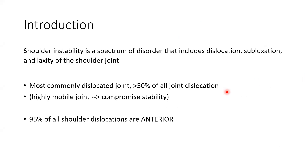Shoulder instability is a spectrum of disorder that includes dislocation, subluxation, and laxity of the shoulder joint. It is the most commonly dislocated joint, accounting for more than 50% of all joint dislocations. This is due to its highly mobile nature, hence compromised stability. 95% of all shoulder dislocations are anterior.